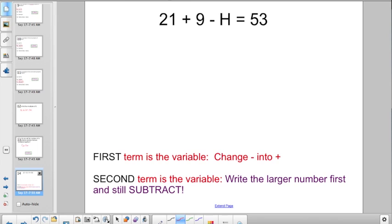So, I want to run a review on here because our Socrative quiz yesterday, the results are telling me we had better. So, hopefully you know, combine terms and isolate the variable, but I want to talk about this on subtraction equations. If the first term is the variable, we change minus into plus. If the second term is the variable, write the larger number first and still subtract.